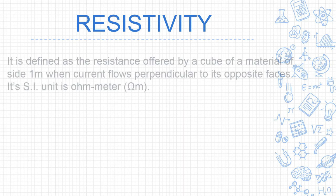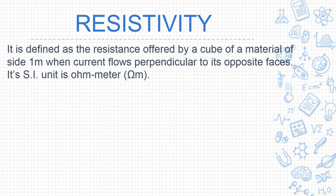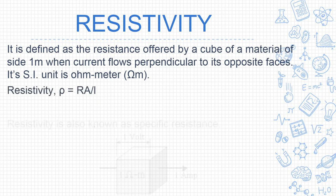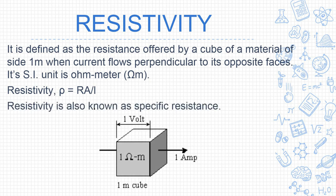Now, what is resistivity? Resistance is a property that opposes electrons from flowing. Resistivity is defined as the resistance offered by a cube of a material of side 1 meter when current flows perpendicular to its opposite faces. Its SI unit is ohm meter, and mathematically, ρ = RA/L.